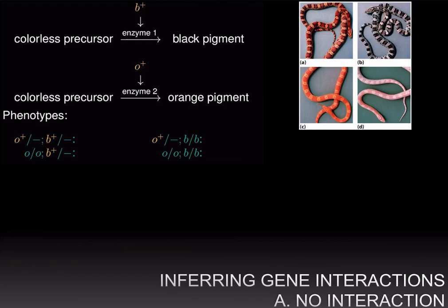Now let us discuss the third step, where we know a trait is controlled by two genes and we would like to determine how those genes interact by making double mutant individuals — individuals who are homozygous for the mutant alleles of both genes. In this step, you carry out a dihybrid cross, and the ratios of the different phenotypes you get in the progeny are diagnostic — they tell you what kind of interaction it is.